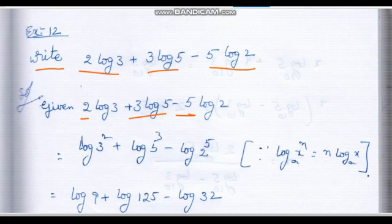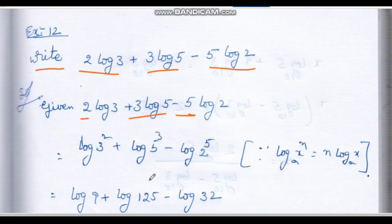Using the power rule: 3 squared is 9, so we get log 9. Then log 5 cubed — 5 squared is 25, 25 times 5 is 125 — so log 125. And log 2 to the power 5 equals log 32.